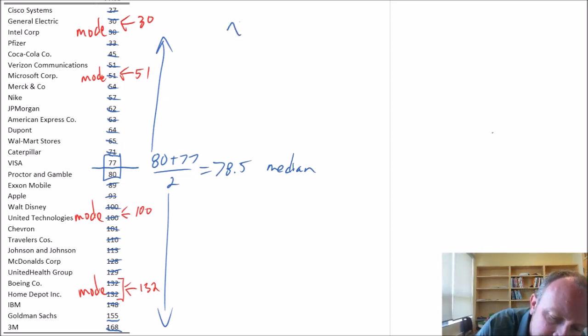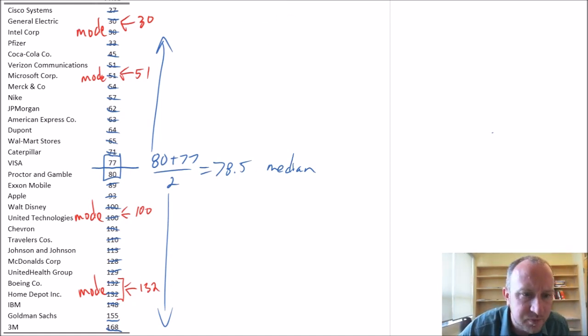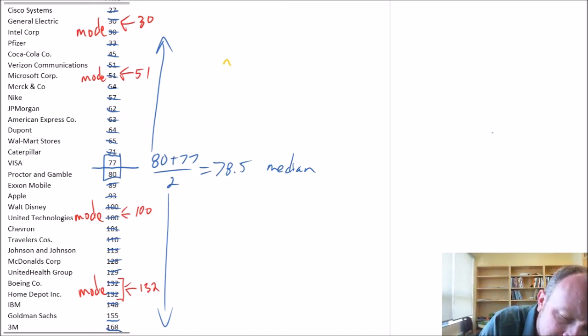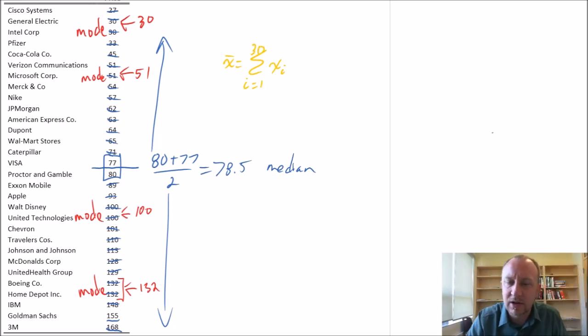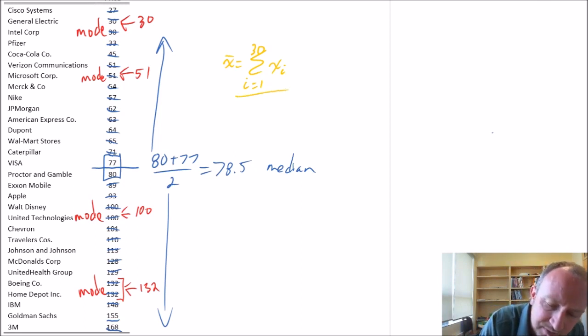Our mean here is going to be x̄ equals—and our formula again, this is looking tedious. Let me change my color. x̄ equals the sum of xᵢ where i equals 1 through n, and n in this case is 30 because I have 30 observations, divided by n, which is 30.